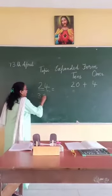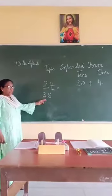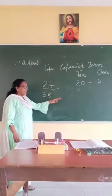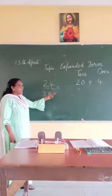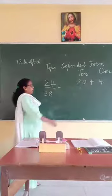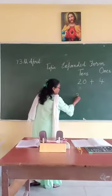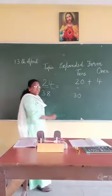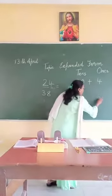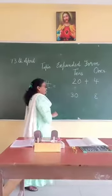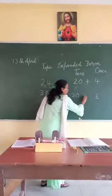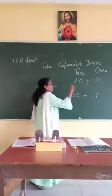Now I give you another number: 38. It is a 2 digit number. We stretch this number again — this is expanded form. 3 will go in the 10s place, so this becomes 30. And 8 will go in the 1s place, so this becomes 38. So 30 plus 8 gives you 38.